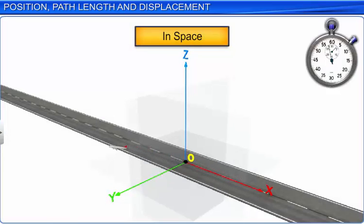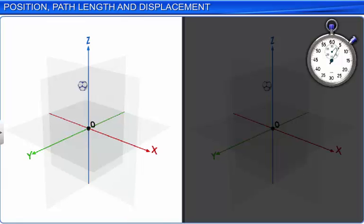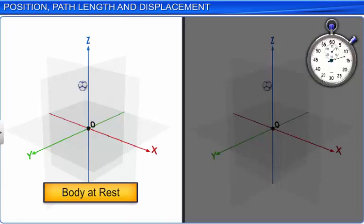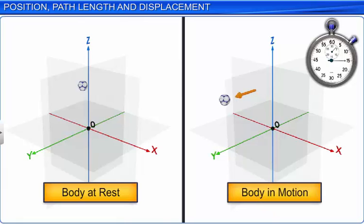When the coordinates don't change with time, the body is said to be at rest with respect to the frame of reference. Rest and motion are relative terms and are always specified with respect to the frame of reference.